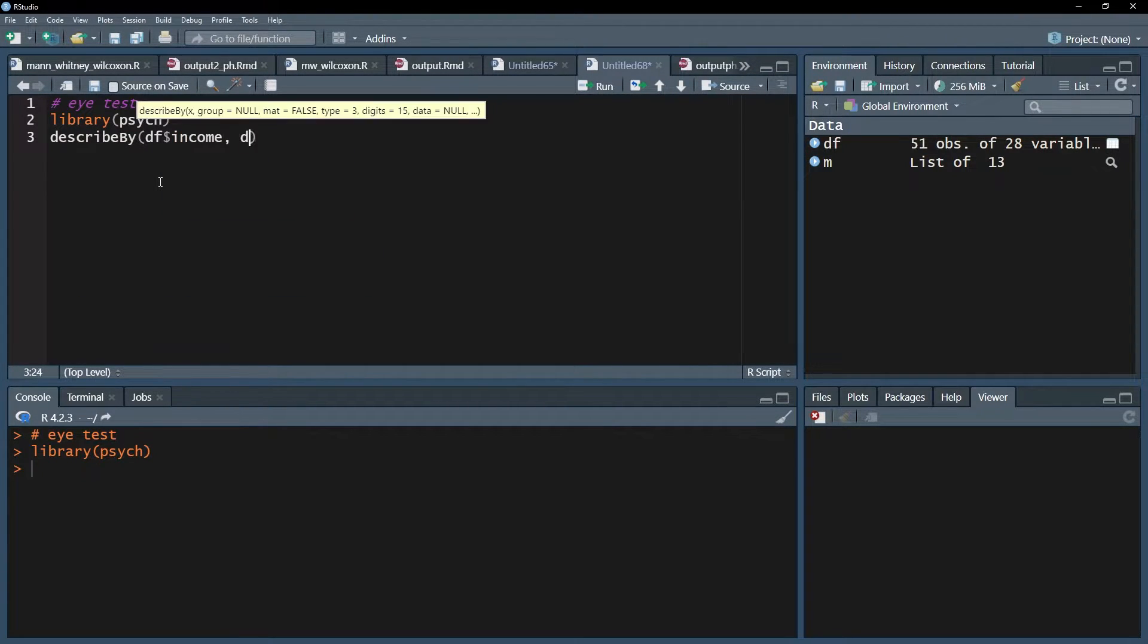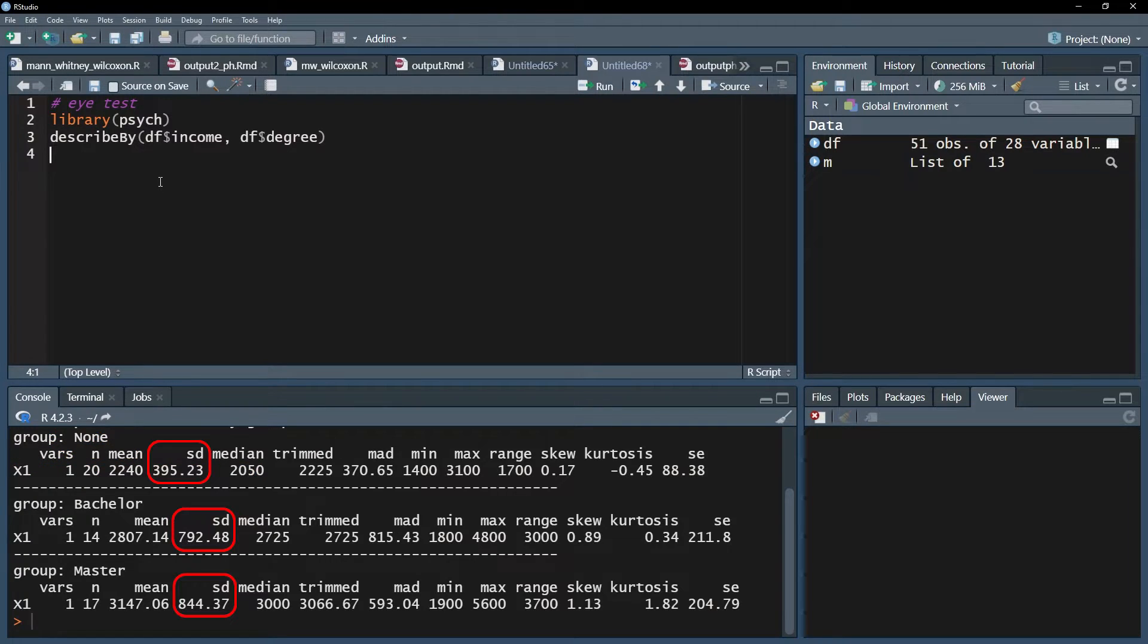Put the test variable first, then your group variable. Be aware that this function shows only the square root of the variances, the standard deviation. You can roughly estimate or even calculate the respective variances though.